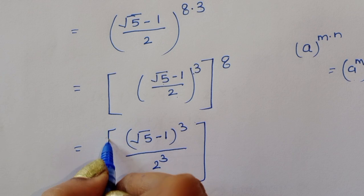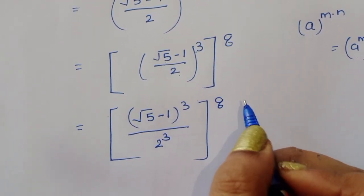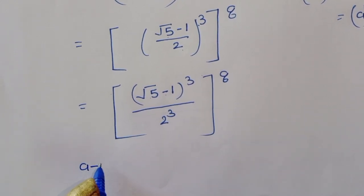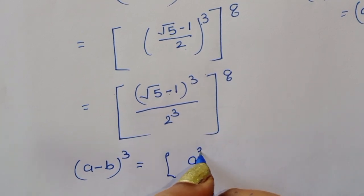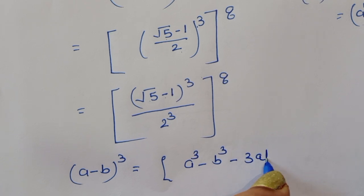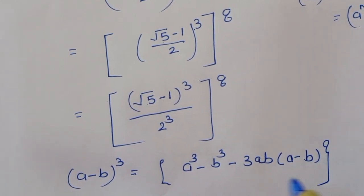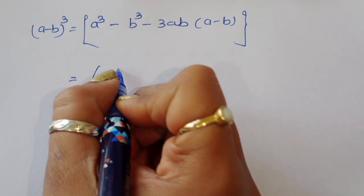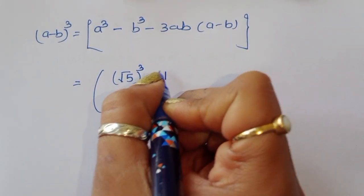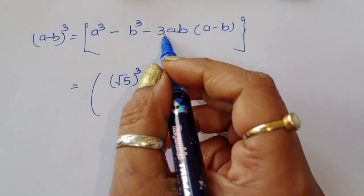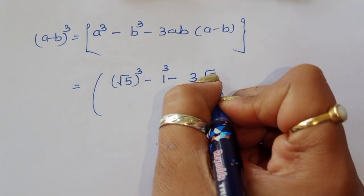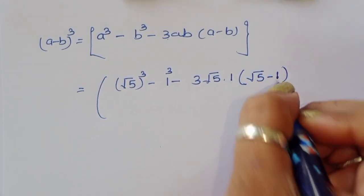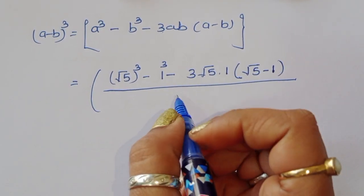We separate the power and raise both numerator and denominator to the power 3. The numerator is (√5 − 1)³, which is of the form (a − b)³. Using the formula (a − b)³ = a³ − b³ − 3ab(a − b), with a = √5 and b = 1, we expand: (√5)³ − 1³ − 3·√5·1·(√5 − 1), all divided by 8.